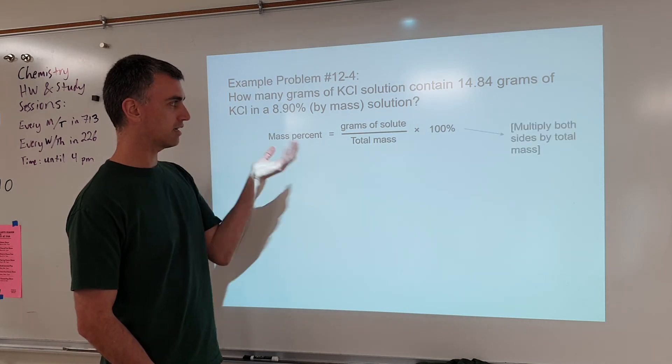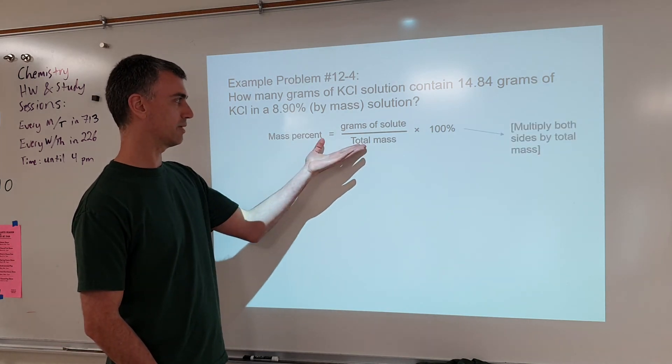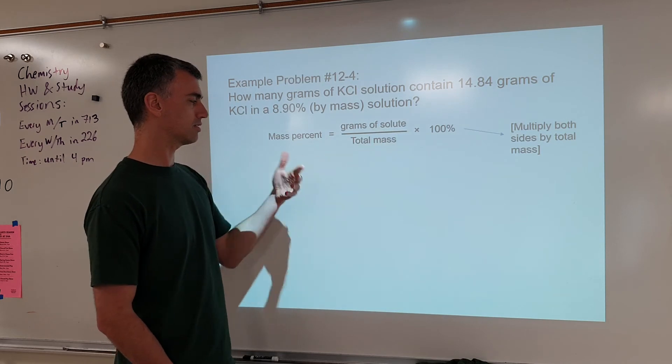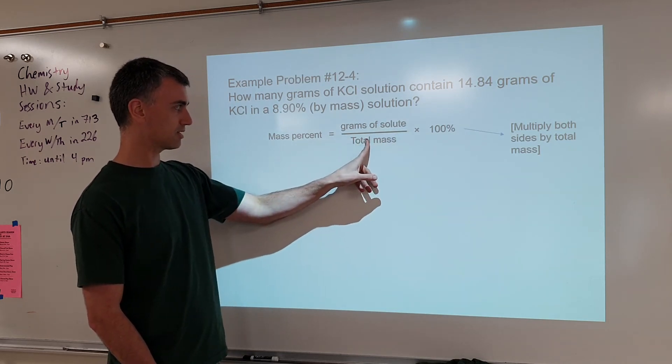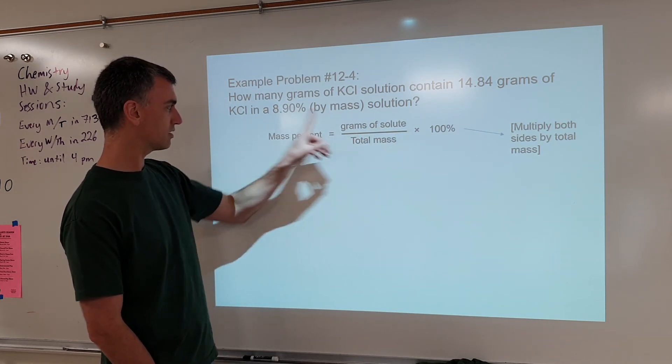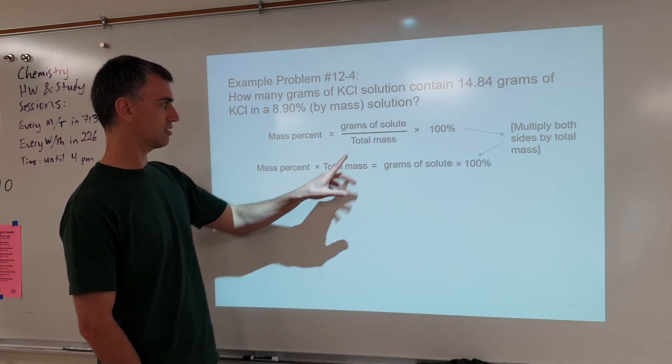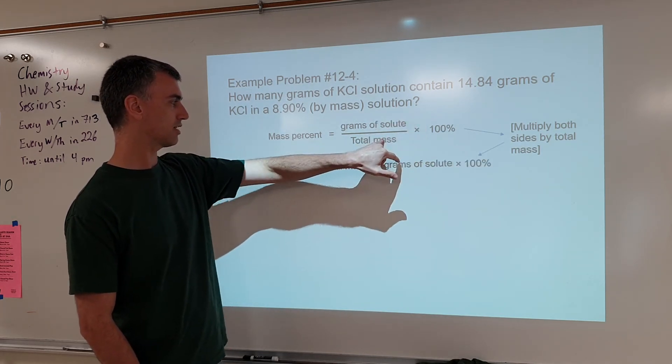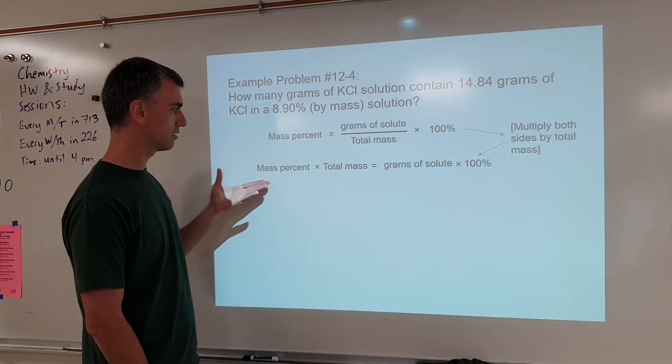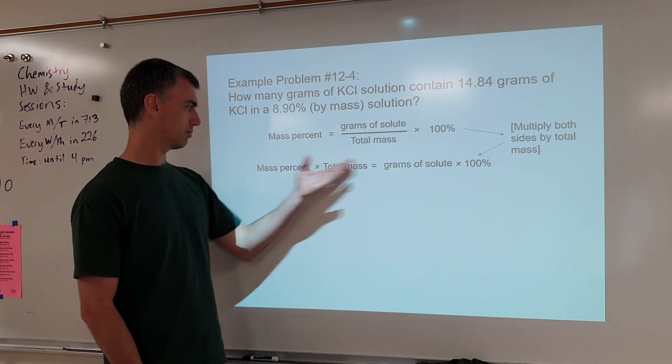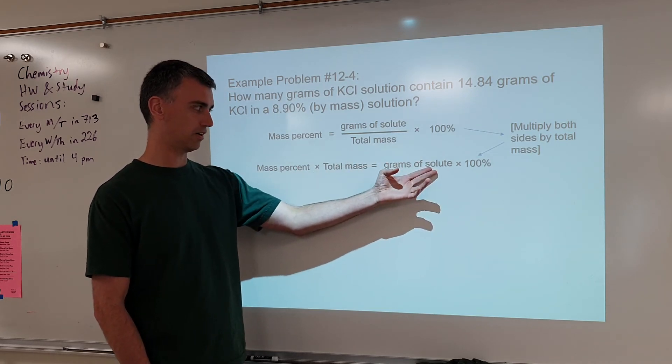So let's do that. How do we get this by itself? Okay, we can multiply both sides by total mass, or divide by this. There's various ways to do it, but I'm going to times both sides by total mass, and we're going to get total mass out from under here and over here. So times both sides by total mass, you get this, because you times this side by total mass, so this can cancel, and you times this side by total mass. There you go. Mass percent is multiplied by total mass. Total mass is canceled out over here.